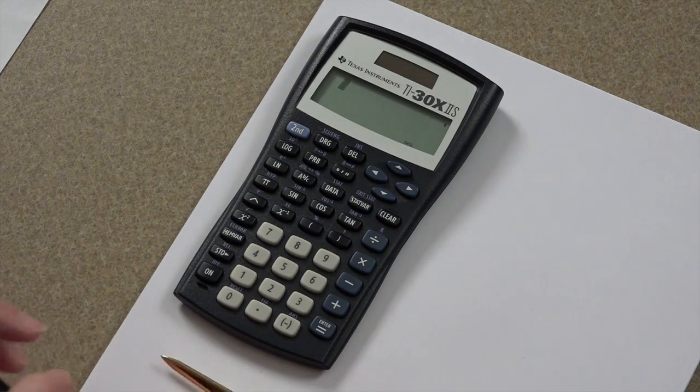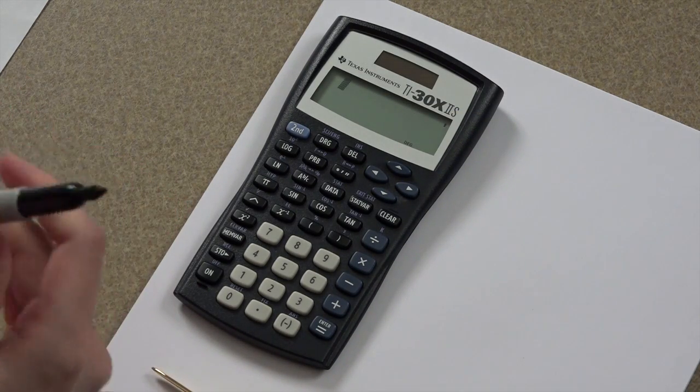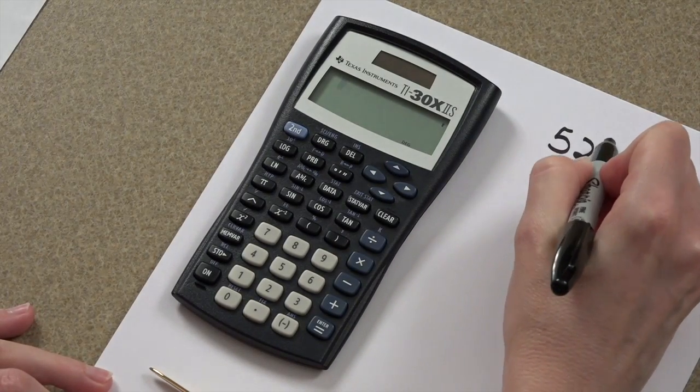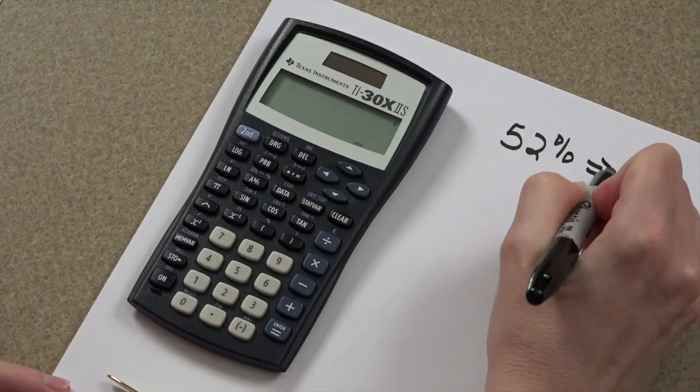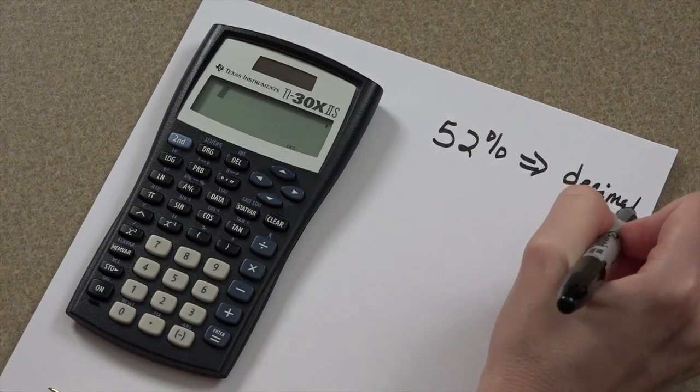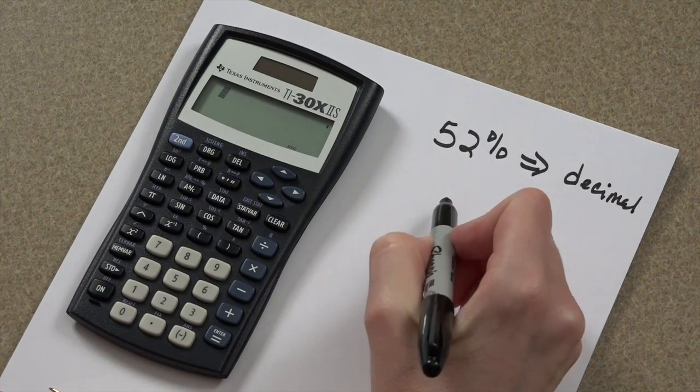One of the awesome things your calculator can help you with is convert a number like 52% to a decimal and then to a fraction.